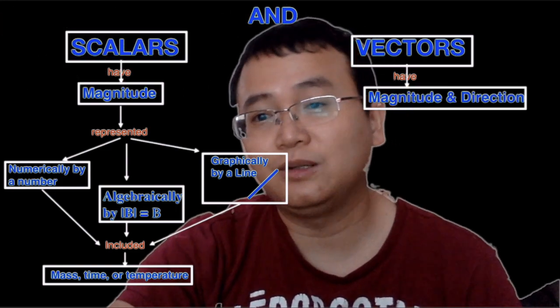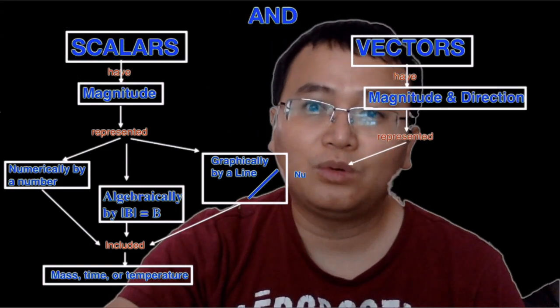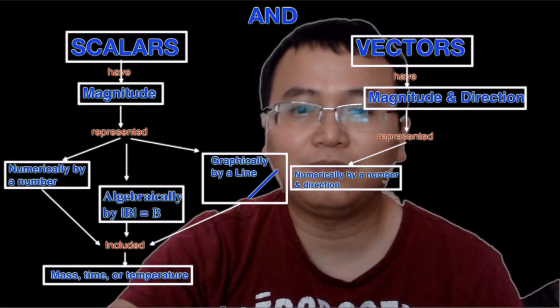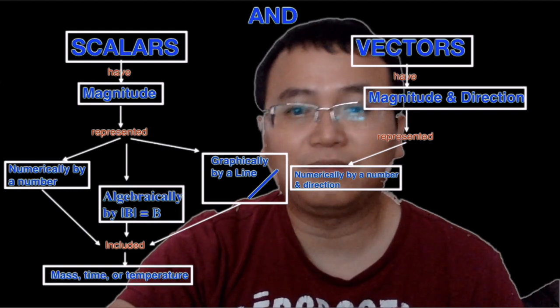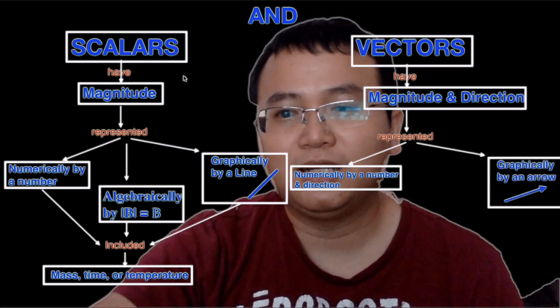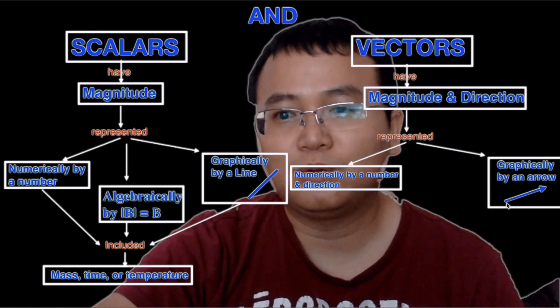Vectors have both magnitude and direction, so they're represented by a number and a direction. Five newtons to the left. And graphically it's represented by an arrow because an arrow has both magnitude and direction.